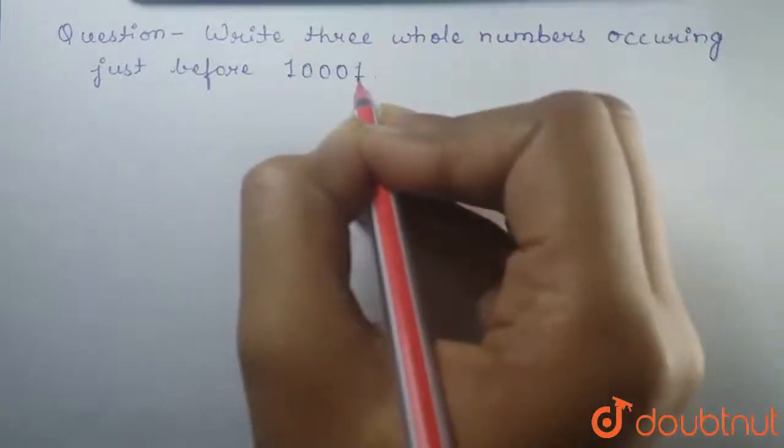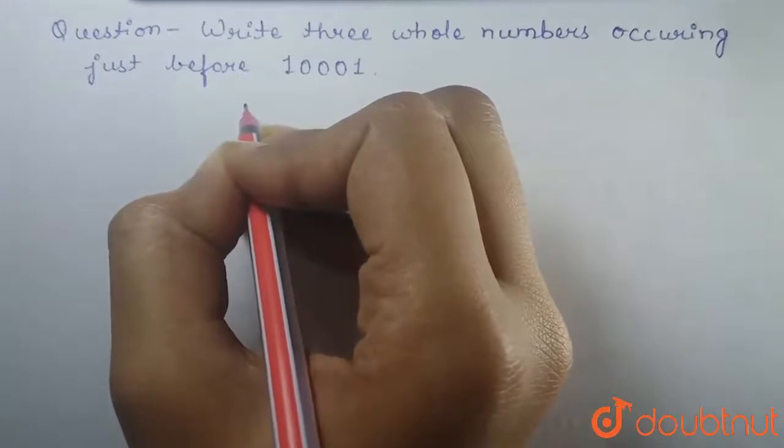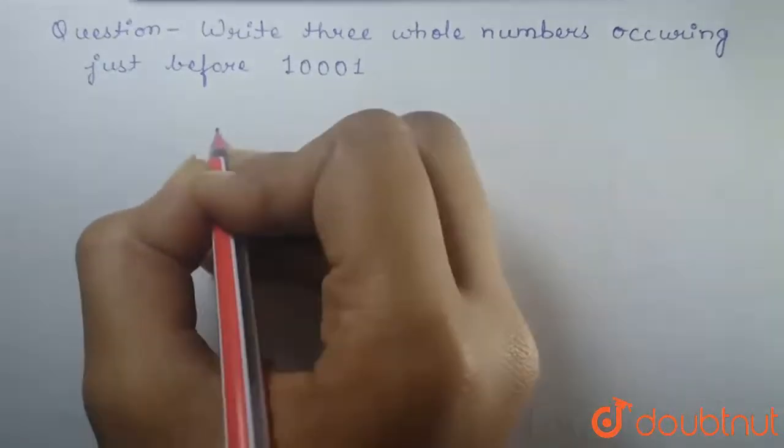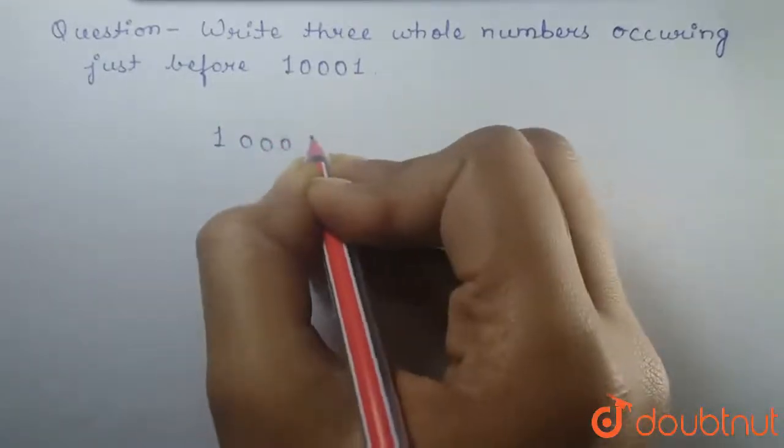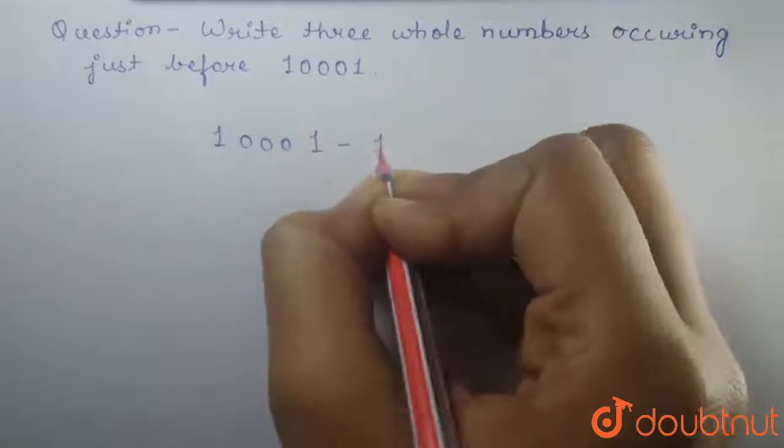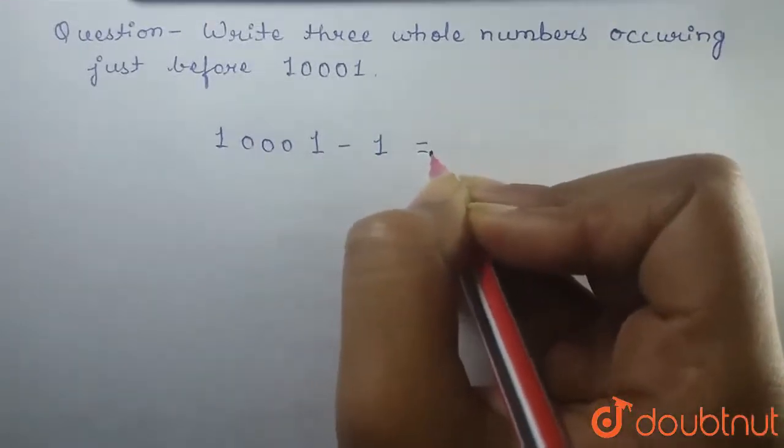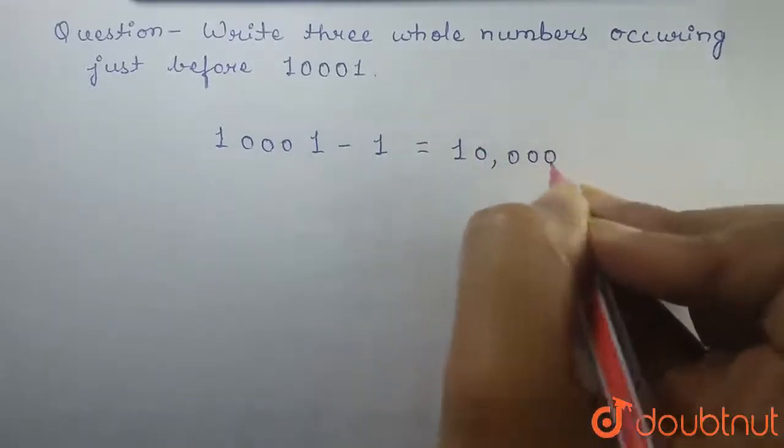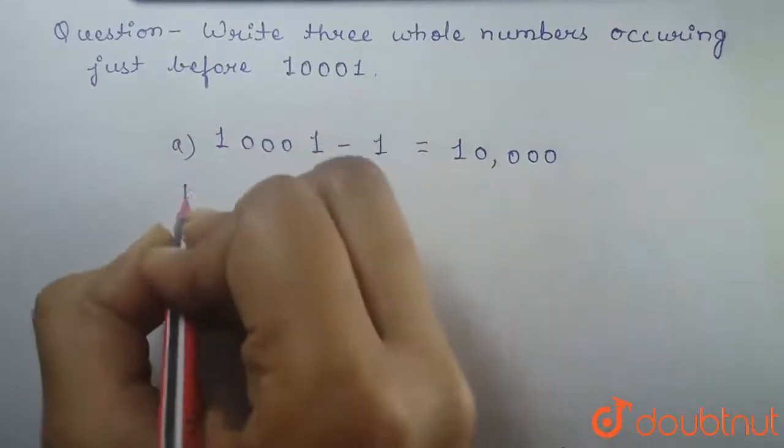We can easily find a whole number occurring just before 10001 by subtracting one from 10001. So here we are going to subtract one from 10001, which gives us 10,000. This is our first step.